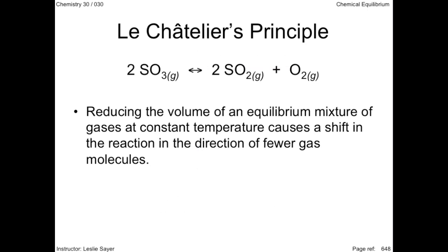Reducing the volume of an equilibrium mixture of gases at constant temperature causes a shift in the reaction in the direction of fewer gas molecules. In the equation, there are two gas molecules of the reactant side for every three on the product side.